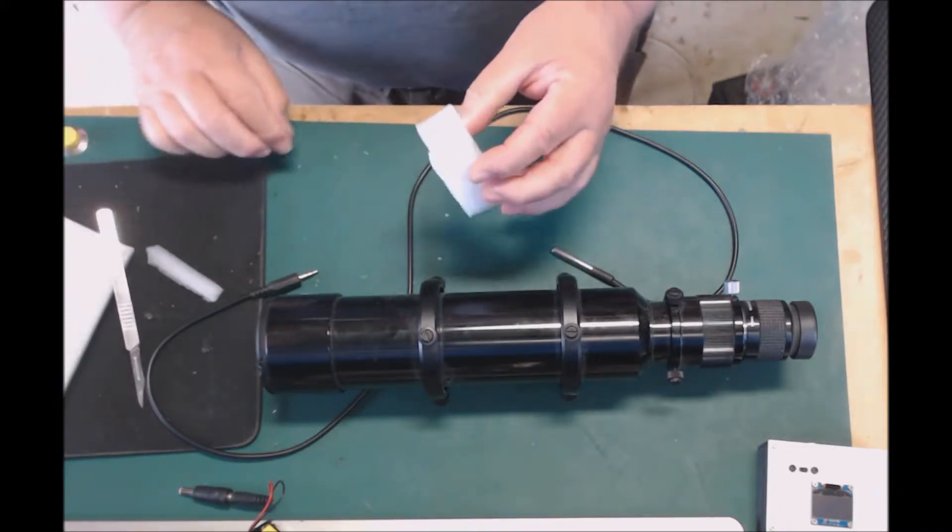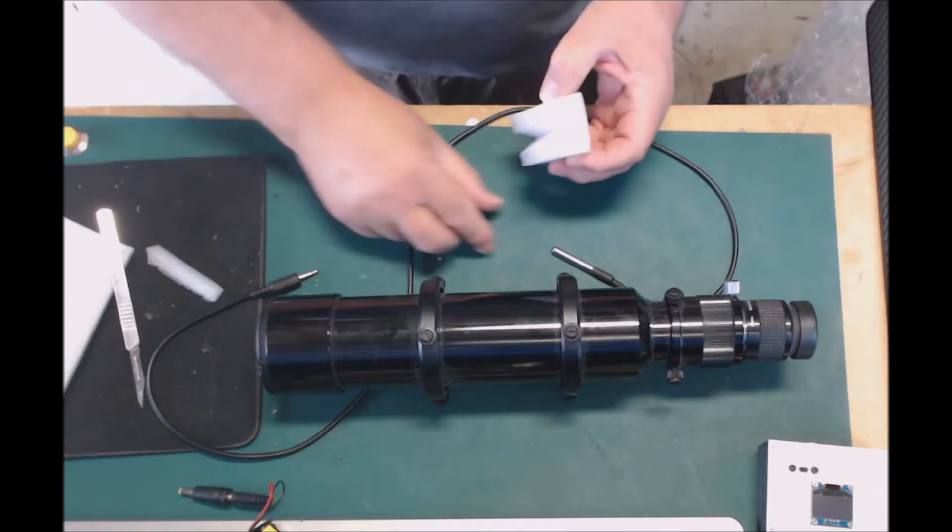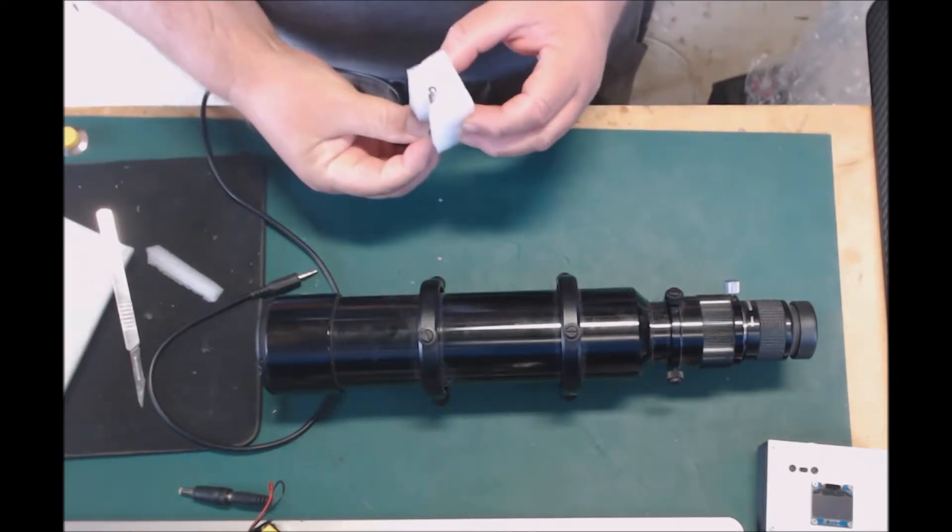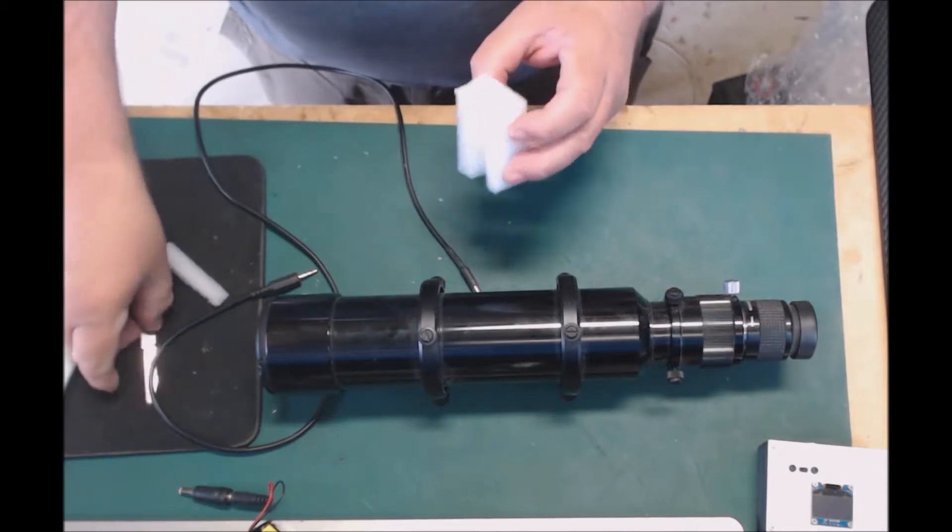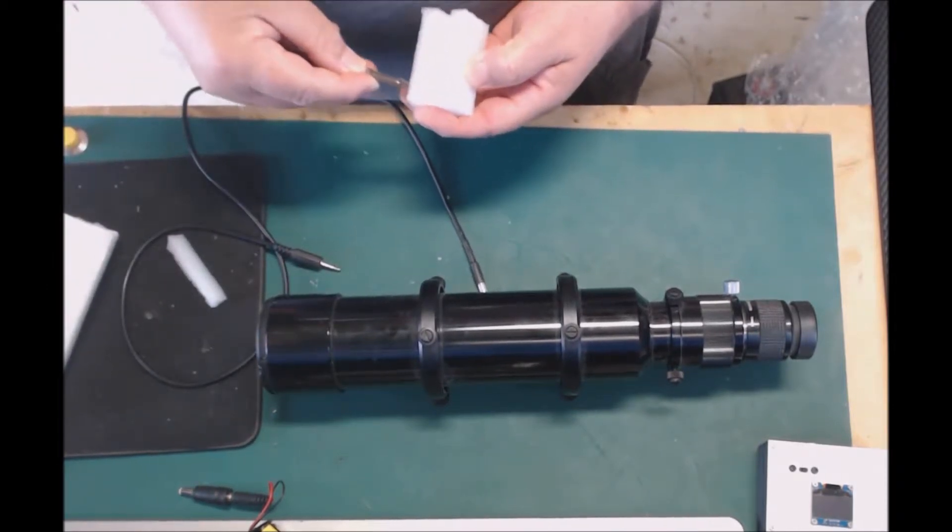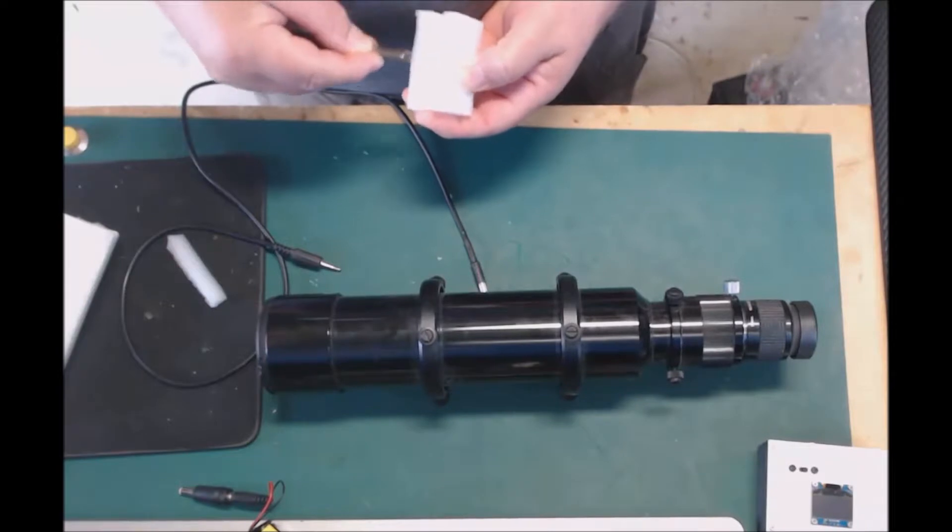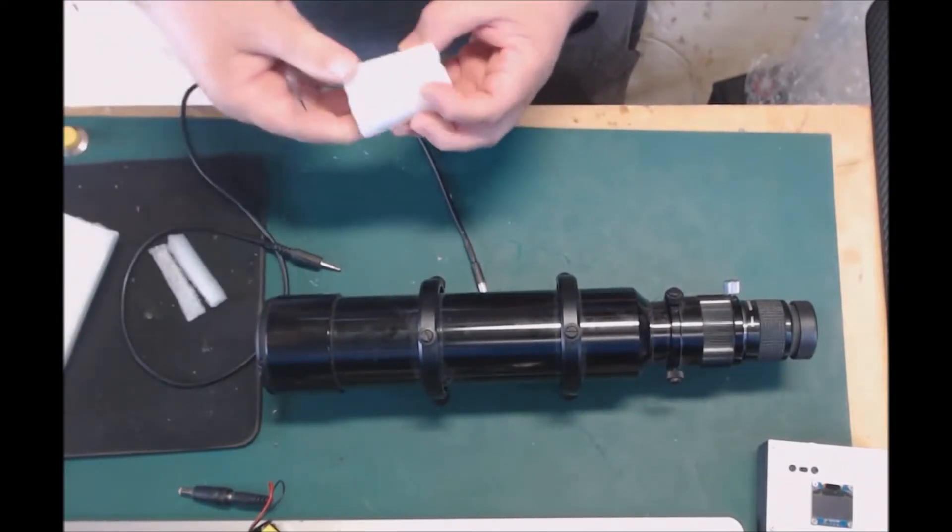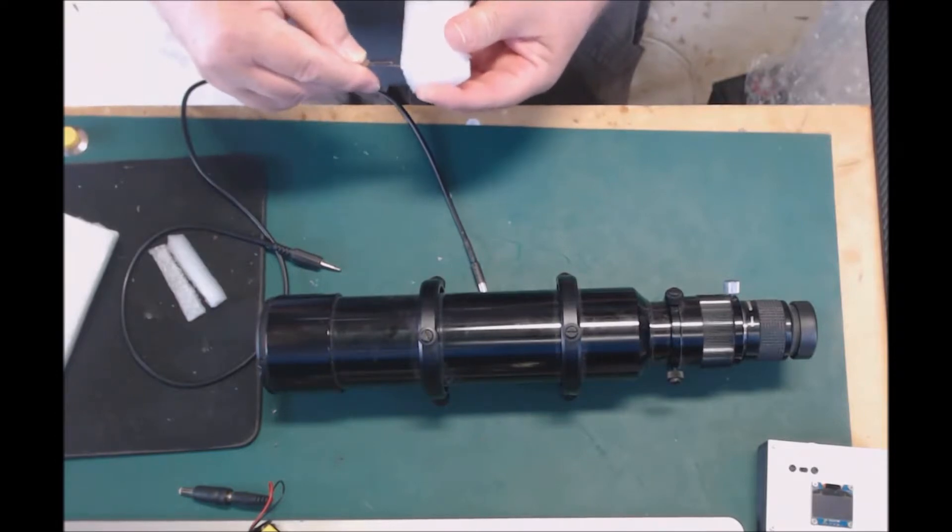There we go, so we've got a nice V groove and I'm going to put this in here like this and ensure that it makes contact. The groove's a bit thick, so I'm just going to cut off some of the foam. Doesn't have to be fancy.